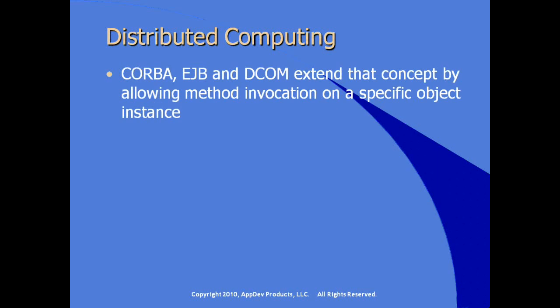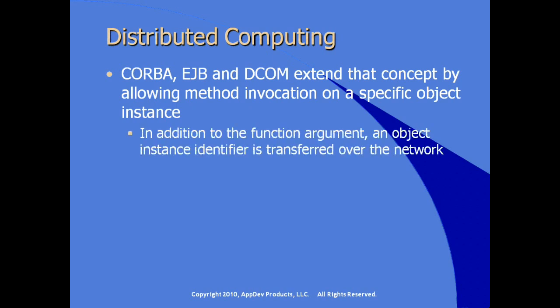CORBA, EJB, and DCOM applications extend the concept of remote procedure calls by allowing method invocation on a specific object instance. In addition to the function argument, an object instance identifier is transferred over the network. This is referred to as distributed objects.